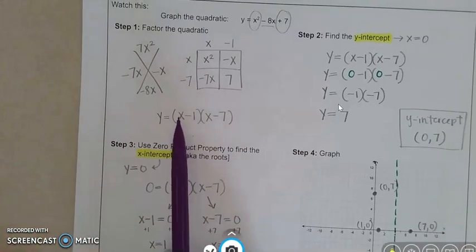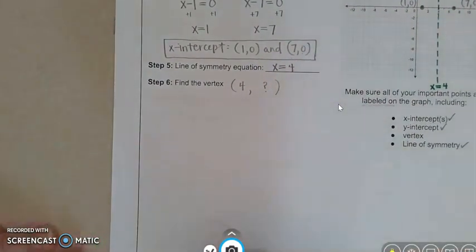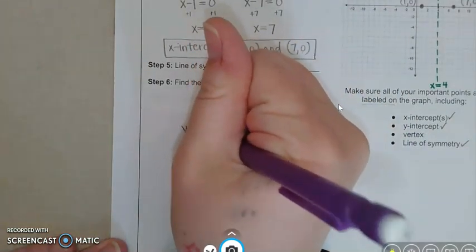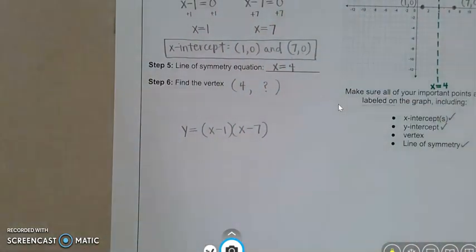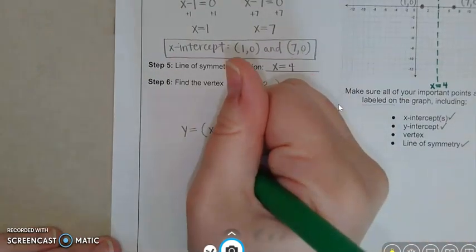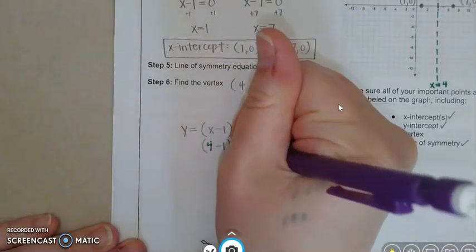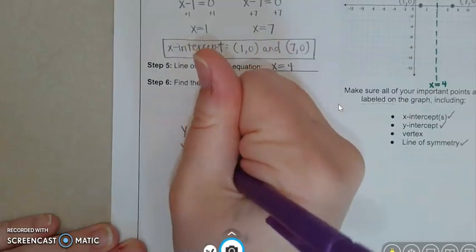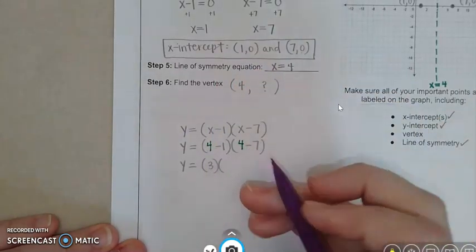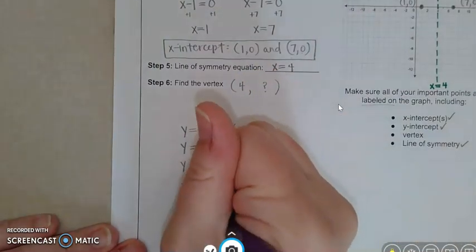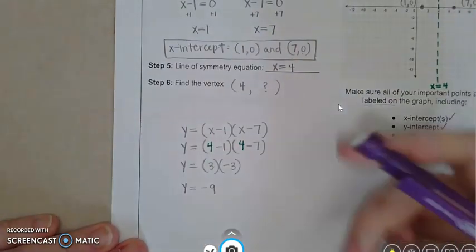All we got to do is just turn x into a four and solve it. So you could plug four in here and solve, or you could plug four in here and solve. Either one is going to give us the same answer. I'm going to do the factored. I just like working with the factored form. So y equals x minus one times x minus seven. And as I said, where x is, put in a four. So a four here and a four here. Four take away one is three. Four take away seven is negative three. And three times negative three will give us negative nine.